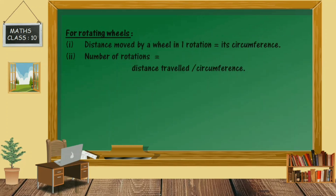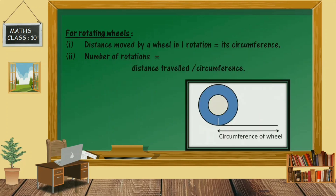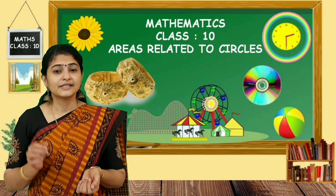Next are some important results for rotating wheels. The distance moved by a wheel in one rotation equals its circumference. To find the number of rotations, divide the total distance travelled by the circumference.